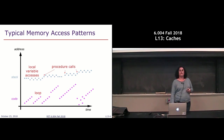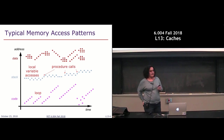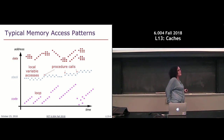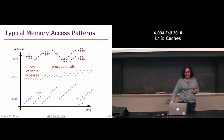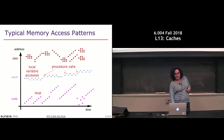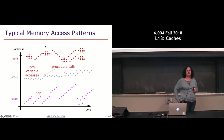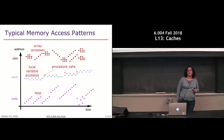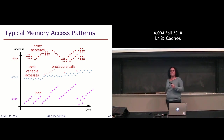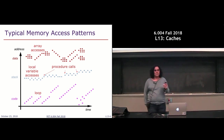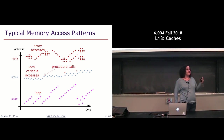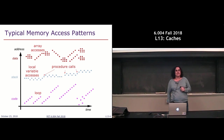That's what stack accesses look like. What about data? When we see consecutive locations being accessed, what does that correspond to? An array. Array accesses would look something like this, and then you might have other things that live in different locations in memory which you access for a while and then move on to a different set of variables.